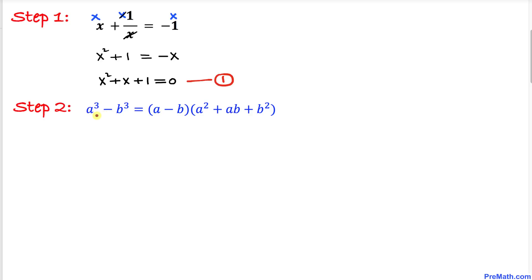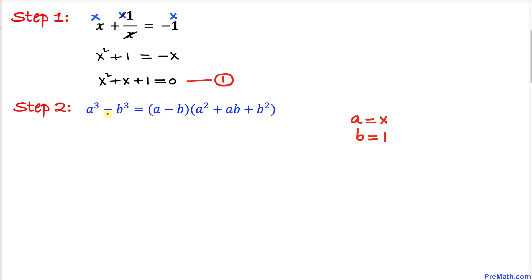Let's recall the well-known formula: a cubed minus b cubed equals a minus b times a squared plus ab plus b squared. Now let's make a substitution — let a equal x and b equal 1.